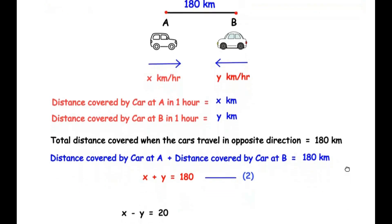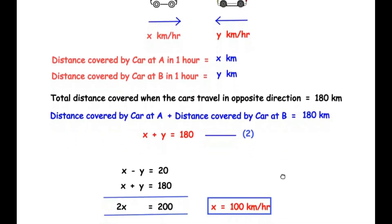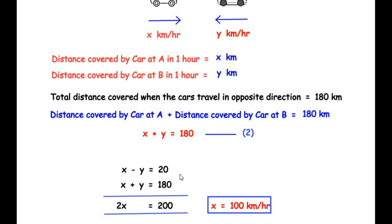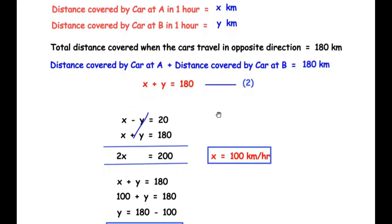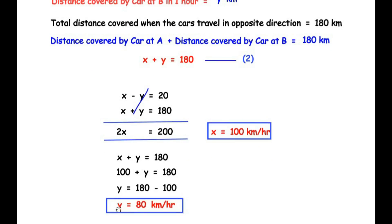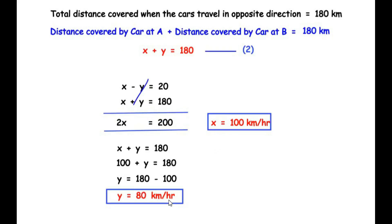Now we solve Equation 1 and Equation 2 together. Adding x minus y equals 20 and x plus y equals 180, the y terms cancel out and we get 2x equals 200, so x equals 100 kilometers per hour — the speed of car at place A. Substituting x equals 100 into Equation 2: 100 plus y equals 180, giving y equals 180 minus 100, which is 80 kilometers per hour — the speed of car at place B.